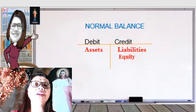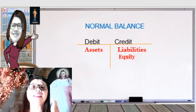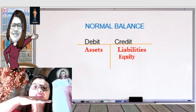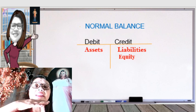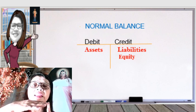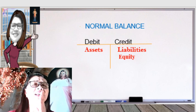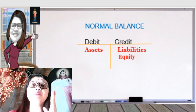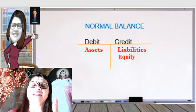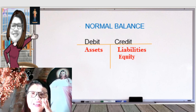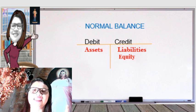Now, I'm giving you the normal balances of the accounts. We know that assets, based on our accounting equation, are always on the left side. The credit balances are the liabilities and the equity account. So the normal balance of assets is debit. The normal balances of liabilities and equity accounts are on the credit side. These are the only three major accounts you need to memorize throughout your career in accountancy.